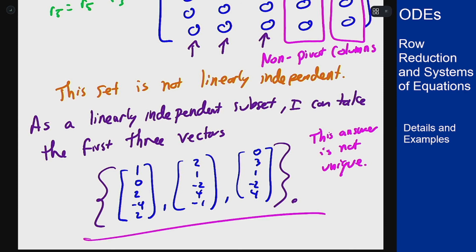There's an example of using row reduction to discuss independence of vectors and how you can determine a linearly independent subset of a collection of vectors that's not linearly independent using the pivot columns of the matrix that you get by row reducing the matrix where you put the vectors in as columns.